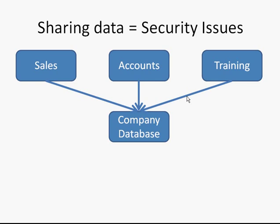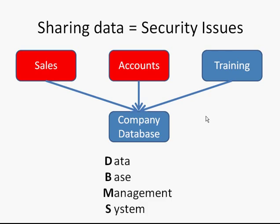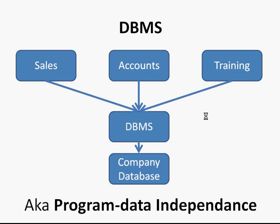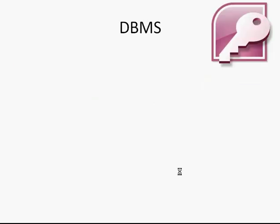This, however, brought about security issues. If the sales department and the accounts department both wanted to access the same customer's data simultaneously, we might get problems. This is why we have the DBMS — the database management system. The DBMS acts as a layer between different departments' programs and the central company database. The DBMS is also known as Program Data Independence. Microsoft Access is a DBMS you might be familiar with.